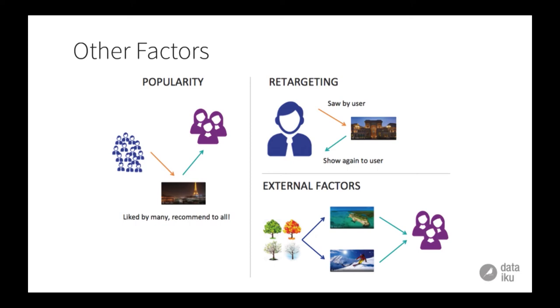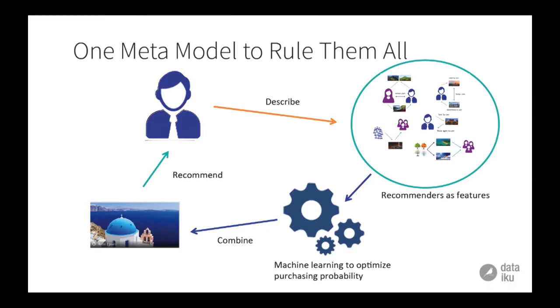There are a lot of different factors that could also change this recommendation — for example, popularity. You want to push Paris because you are able to make a lot of money out of Paris. You want to be able to retarget people because if you came to the website yesterday and actually visited one sale, I still want to display that again to you. And finally, you have external factors such as: I'm not going to ski in summer, and I'm not going to Punta Cana in December. So how do we combine all of these? The idea here is to do what we call retargeting, and it is to combine the different recommendation engines.